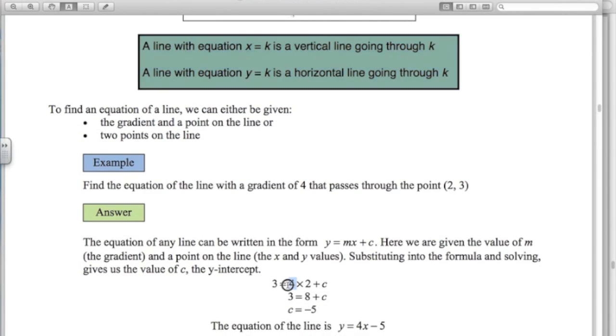So the gradient is 4. The x value is 2. And the y value is 3. So putting that into that equation, 3 is 8 plus c. C is minus 5. So we've got m, gradient's 4. We've found c is minus 5. So the equation of the line is y equals 4x minus 5.